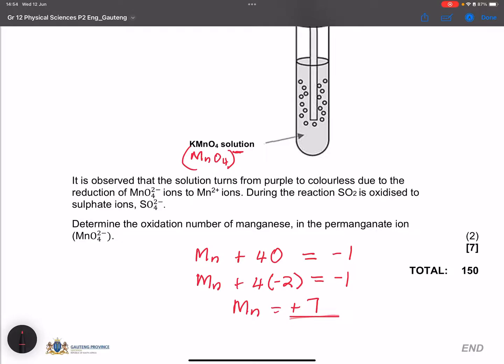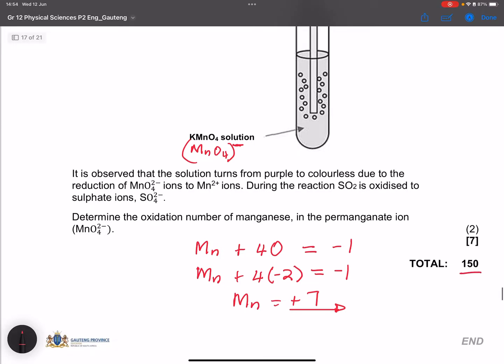So the oxidation state of my manganese ion there would be seven plus. So that is how the cookie crumbles, ladies and gents, and we come to the end of this. That was out of 150.